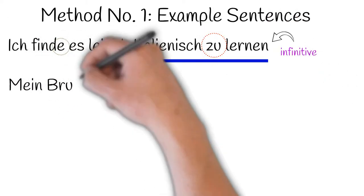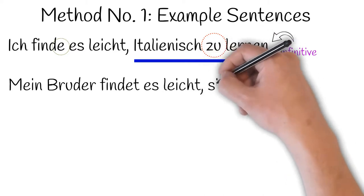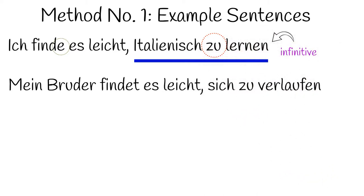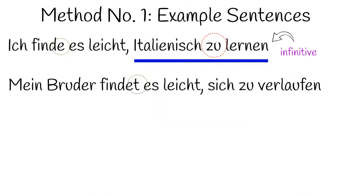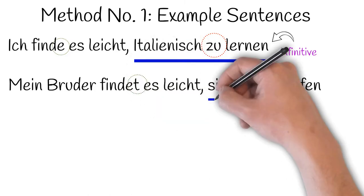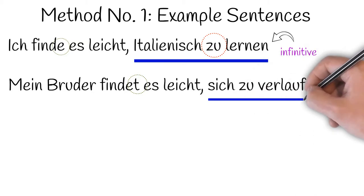Next, mein Bruder findet es leicht, sich zu verlaufen. My brother finds it easy to get lost. Again, finden is conjugated according to the person in charge of the verb, which is a he, mein Bruder. And the second half of the sentence is a zu clause with the unconjugated infinitive verlaufen preceded by zu.